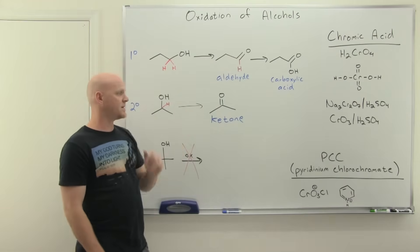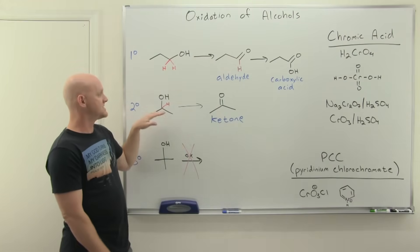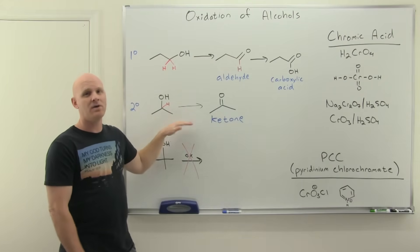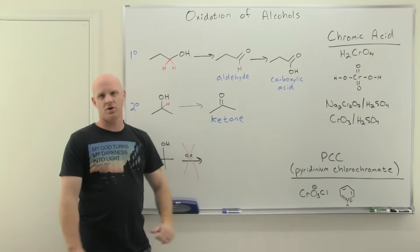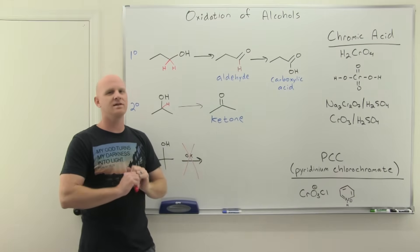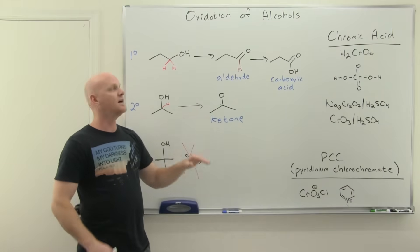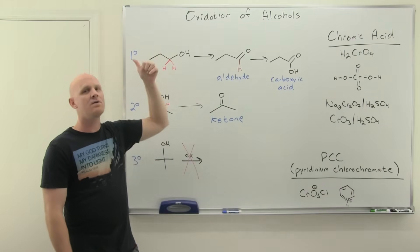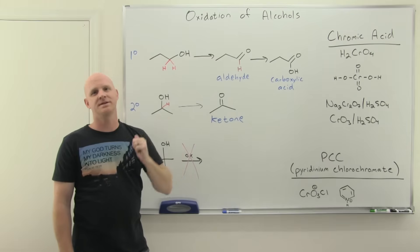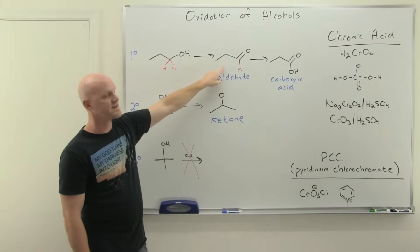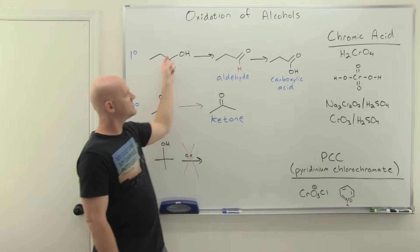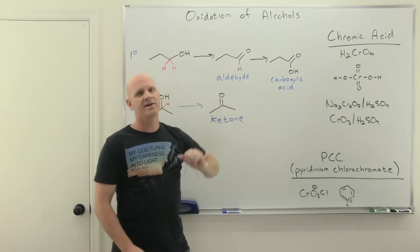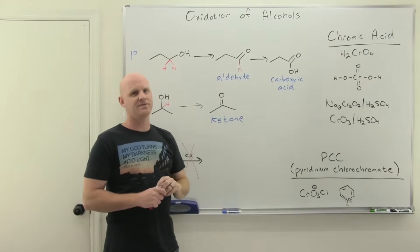So the net result: for a secondary alcohol, it doesn't matter which reagent you use — chromic acid or PCC give the same effect, a ketone. But for a primary alcohol, that's where the big difference lies. PCC stops at the aldehyde; chromic acid goes all the way to a carboxylic acid.